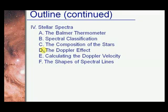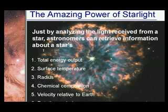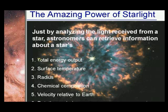Just by analyzing the light received from a star, astronomers can retrieve information such as the total energy output, surface temperature, radius, velocity, chemical composition, and rotation period.